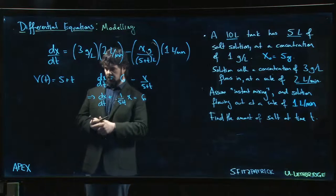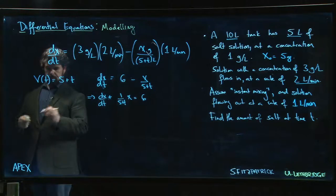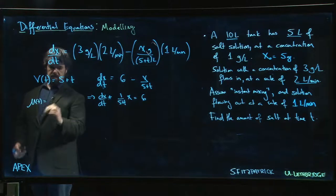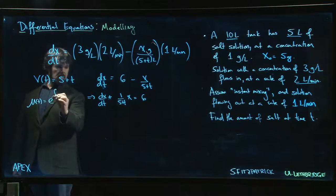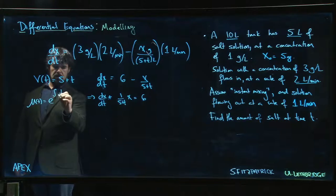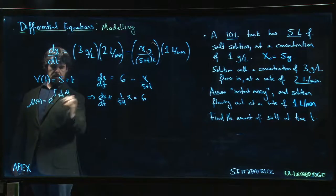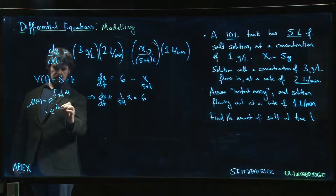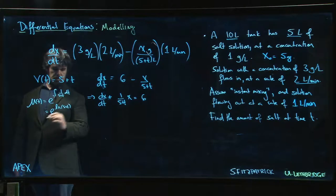We've got to get our integrating factor. What's the integrating factor μ(t)? It's e to the integral of 1 over 5 plus t dt. So that's e to the log of 5 plus t, which is simply 5 plus t.